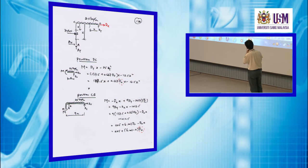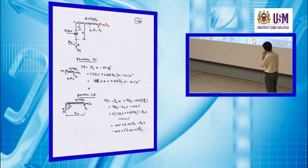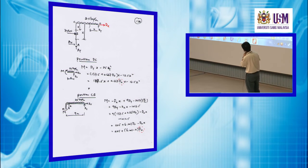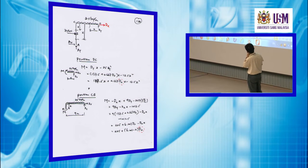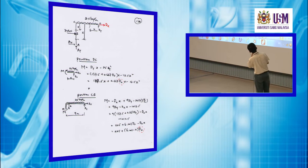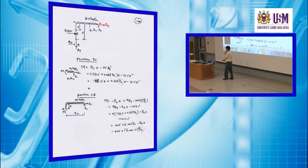Cut here for portion DC. Consider DX as a load, and this is DY. Finally, you get the bending moment as DY·X minus 25X²/2. Since DY is expressed in terms of DX, the bending moment for this portion is also a function of DX.